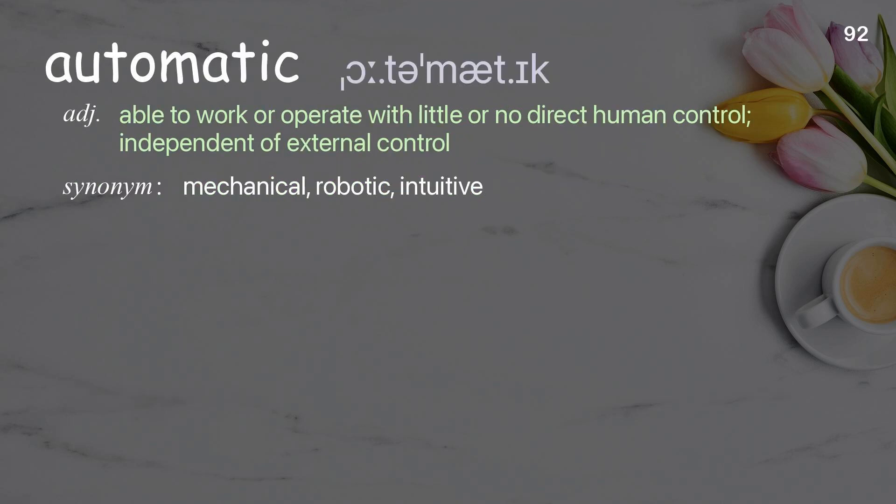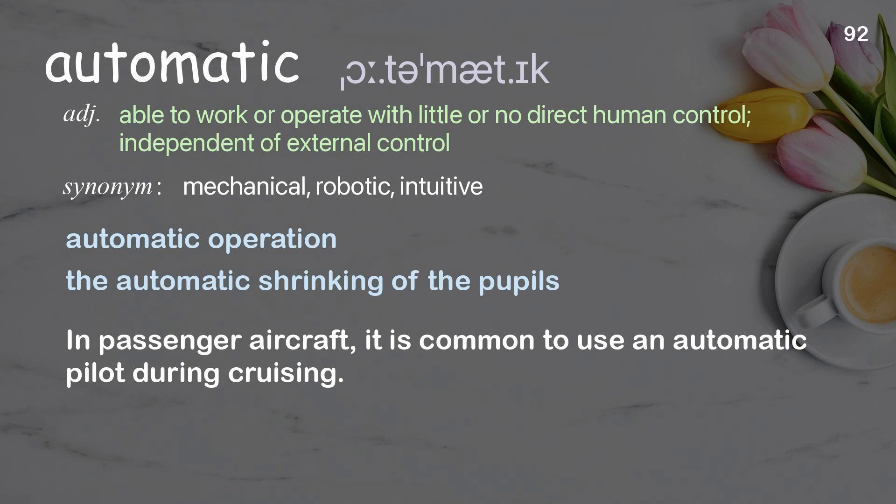Automatic: Able to work or operate with little or no direct human control; independent of external control. Examples: Automatic operation. The automatic shrinking of the pupils. In passenger aircraft, it is common to use an automatic pilot during cruising.